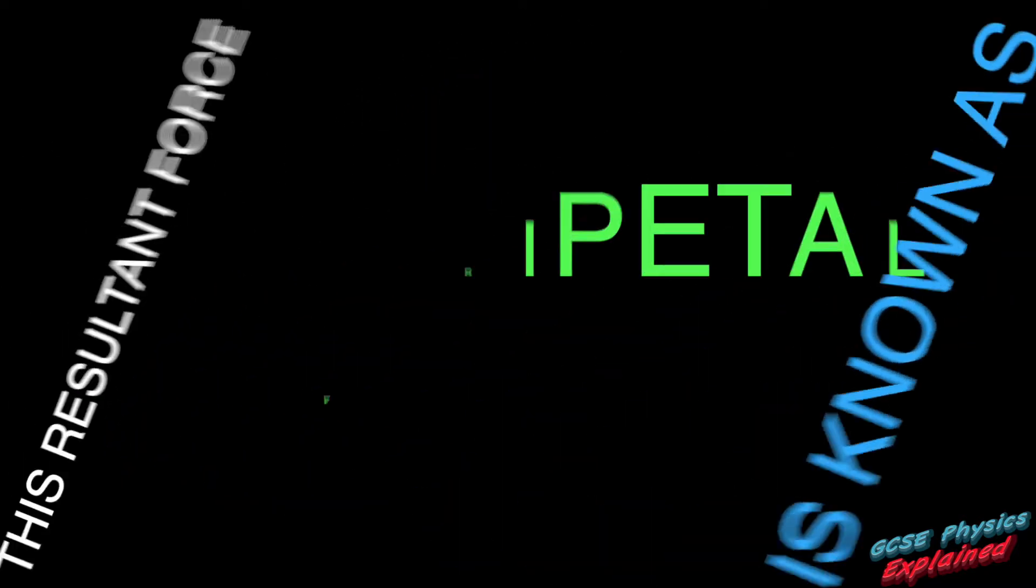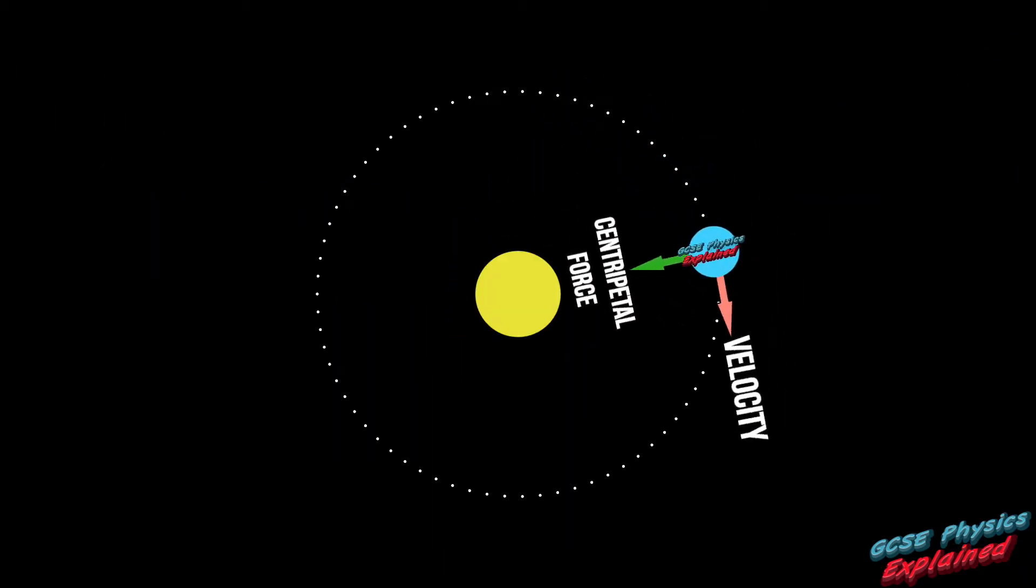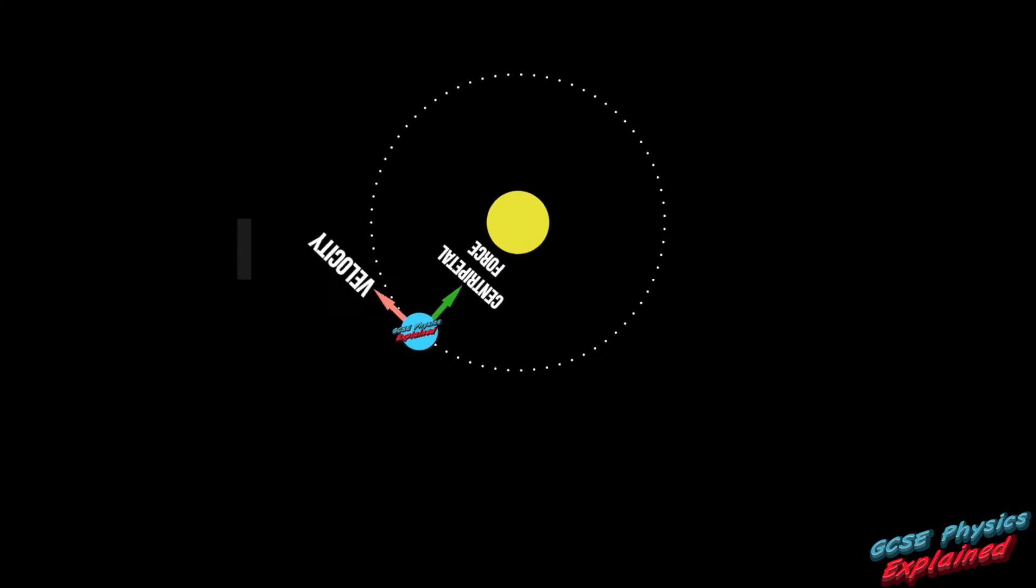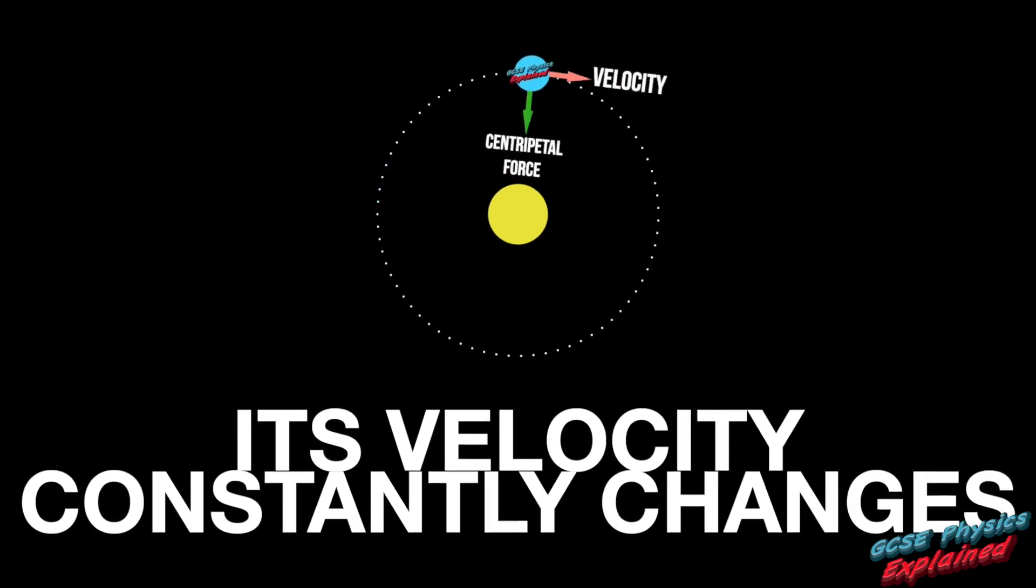This resultant force is known as Centripetal Force. As the object moves in a circle, its velocity constantly changes, even if the speed stays the same.